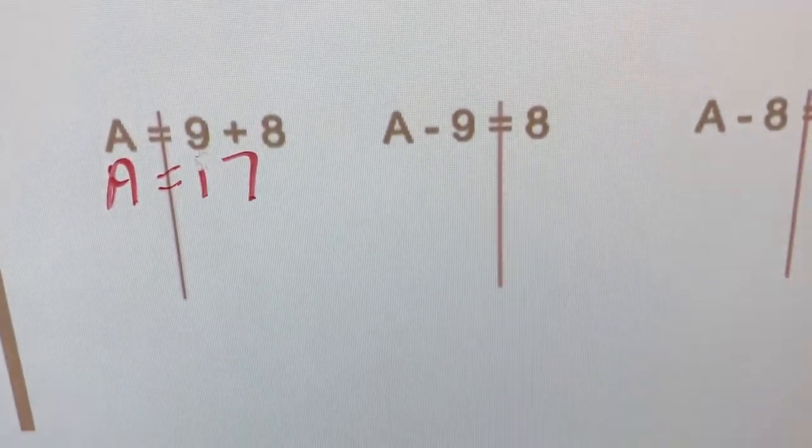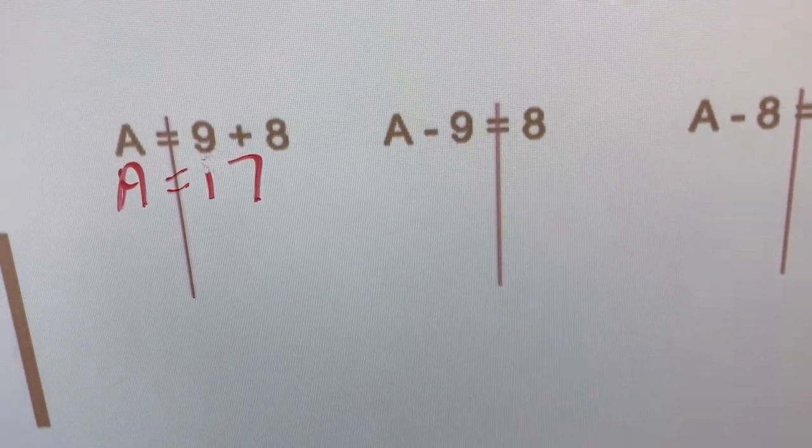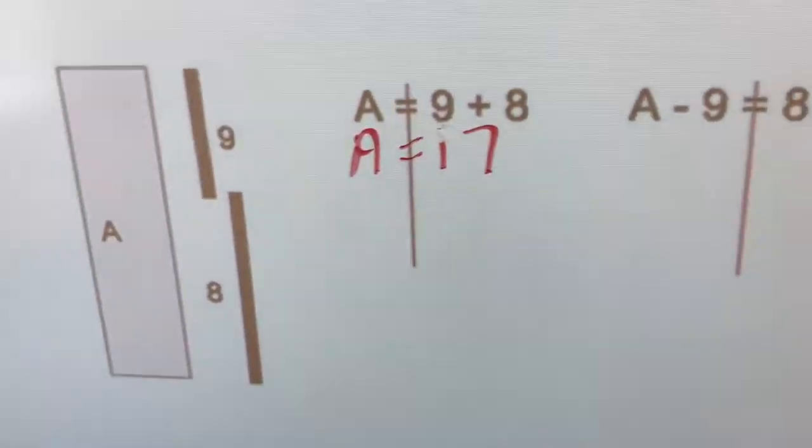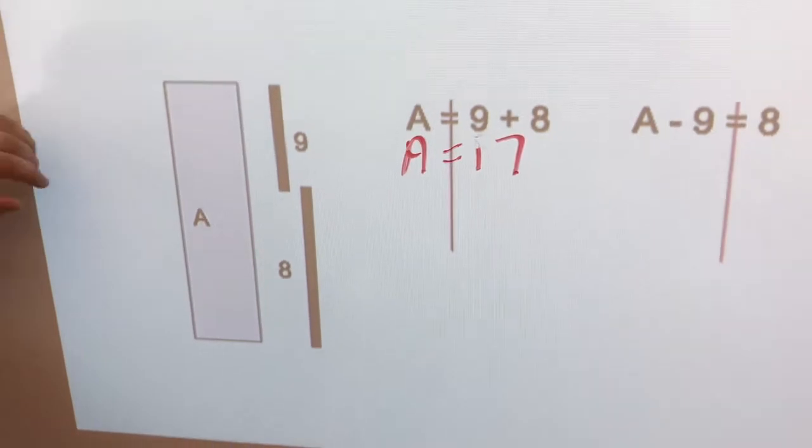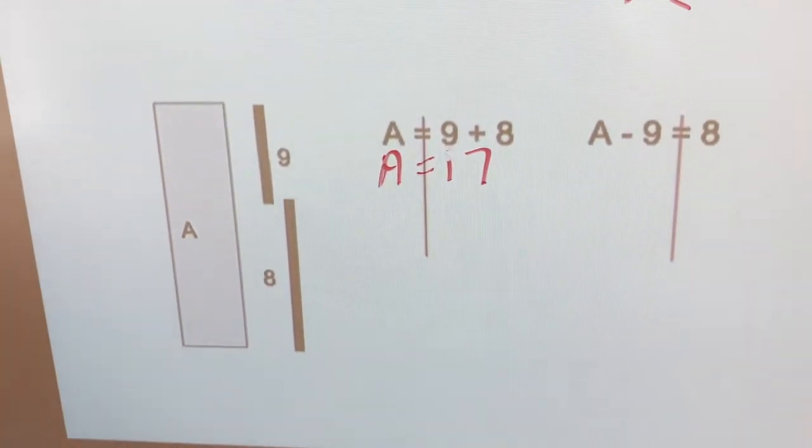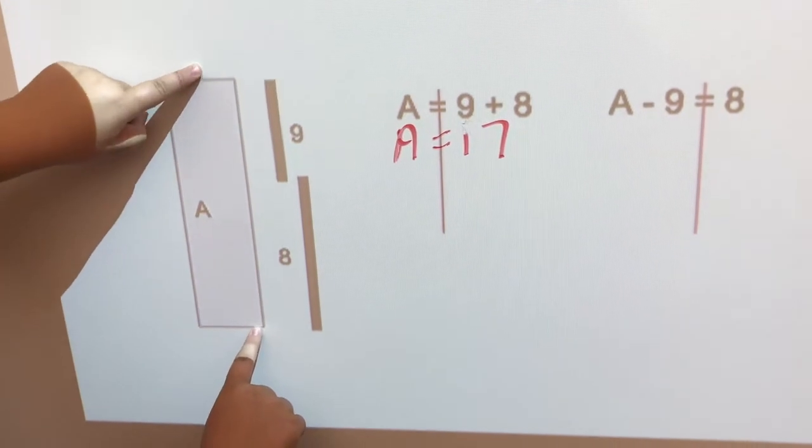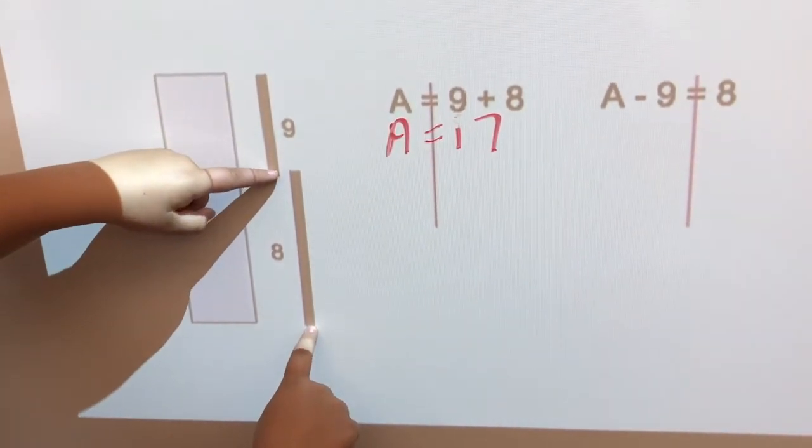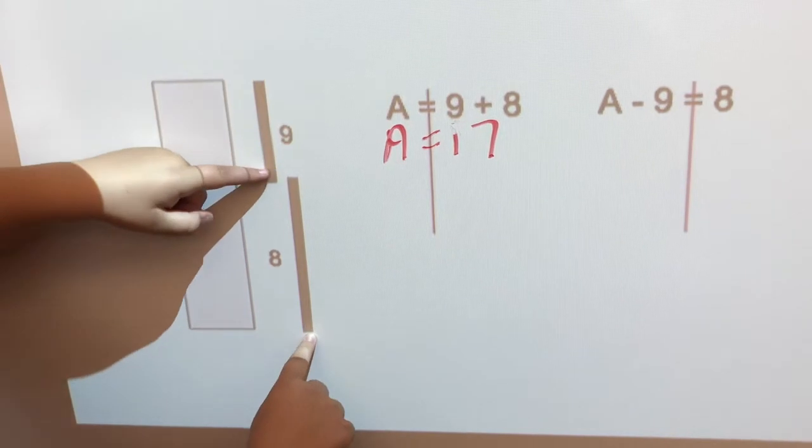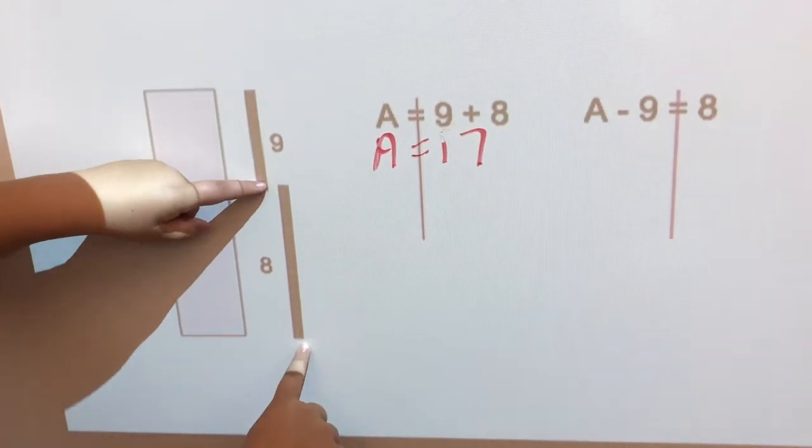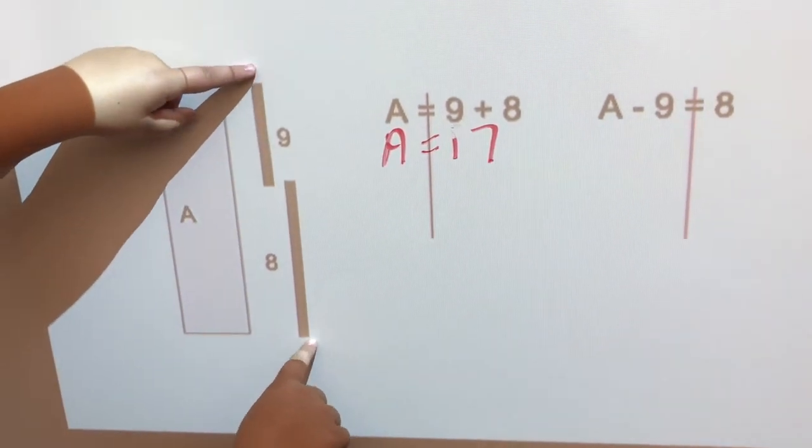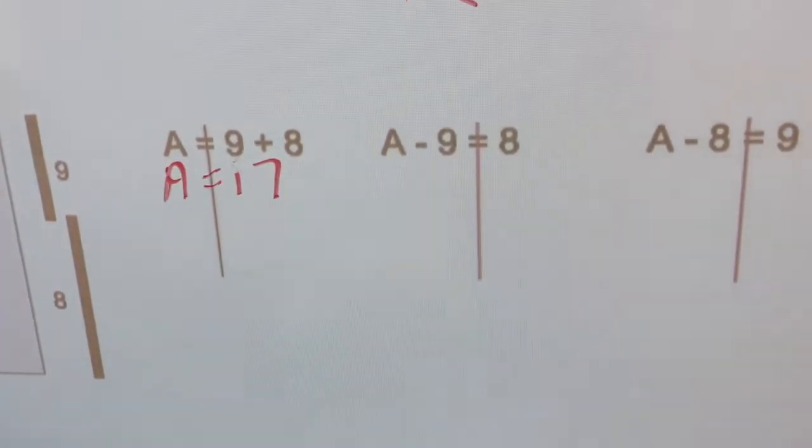Now we're going to look at a different form of that equation. A minus 9 equals 8. See if you can show me that on the diagram. So, start with all the stuff. A? Yep. Take away 9. That's worth 8, right? Yeah. How do you get back to all the stuff? You've got to plus 9. Exactly.